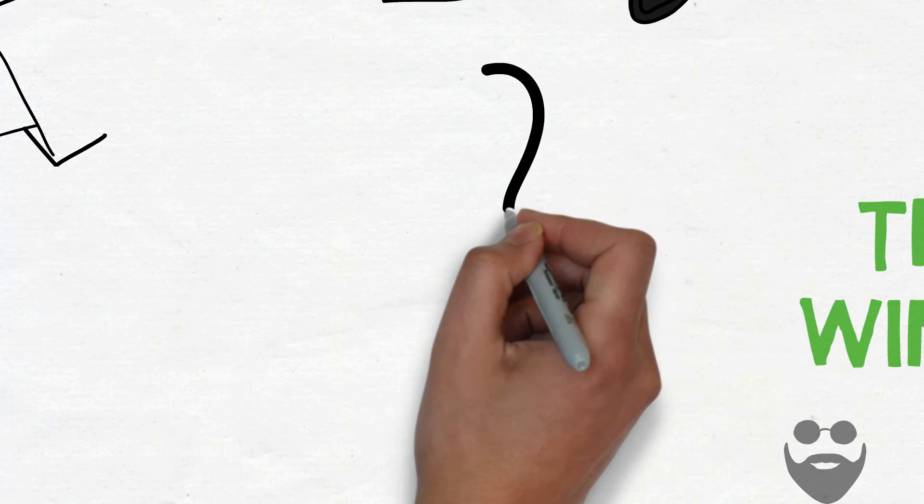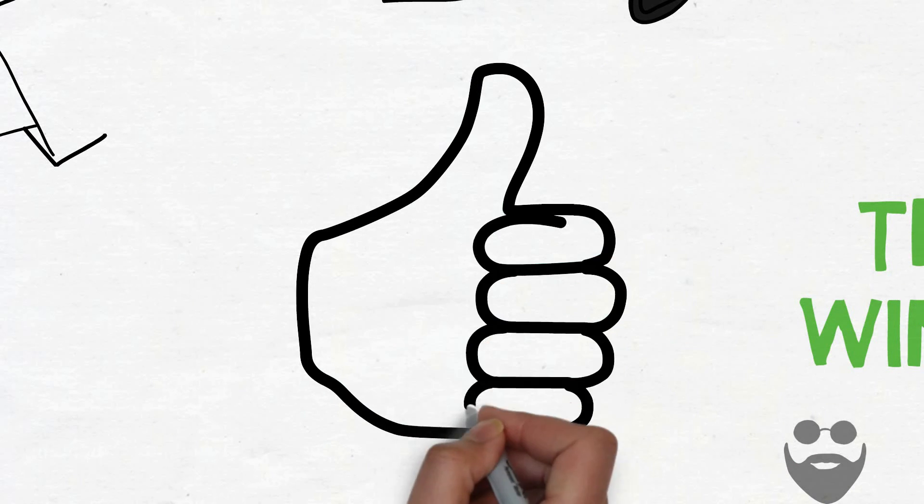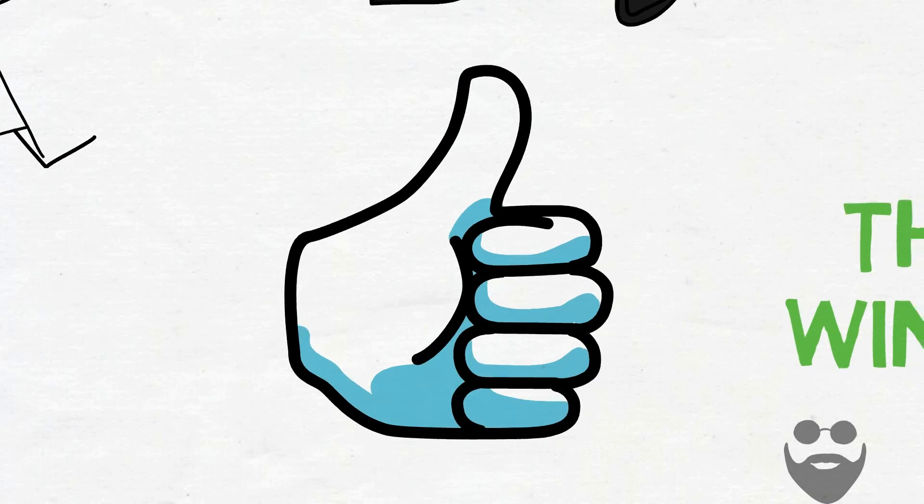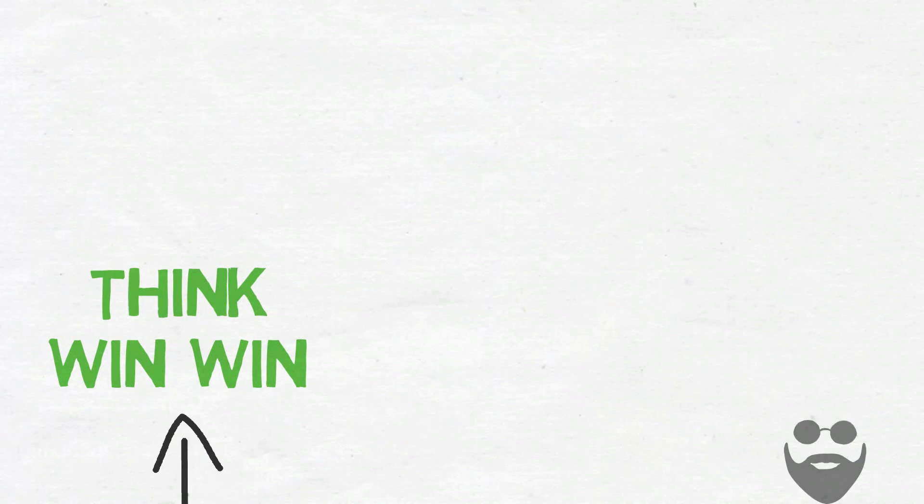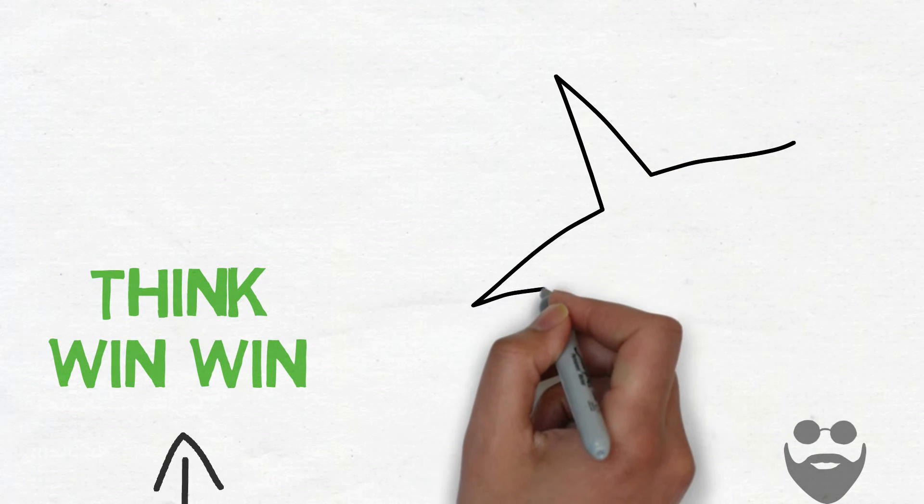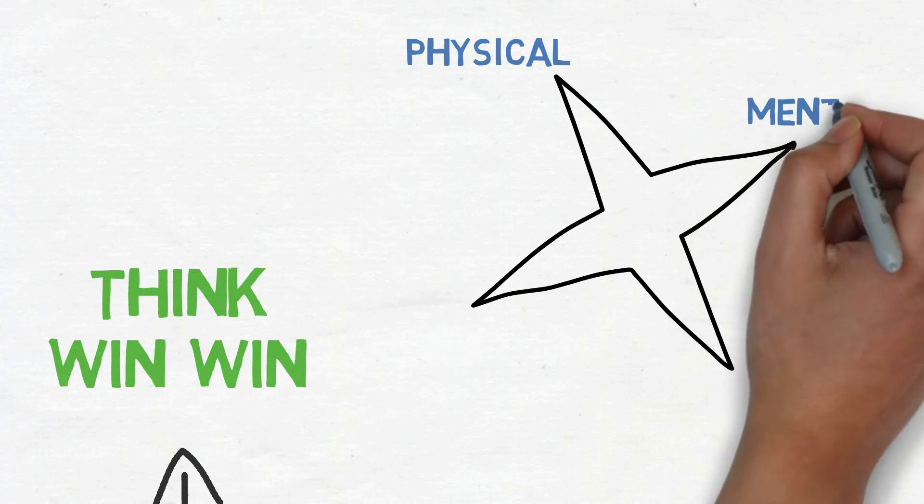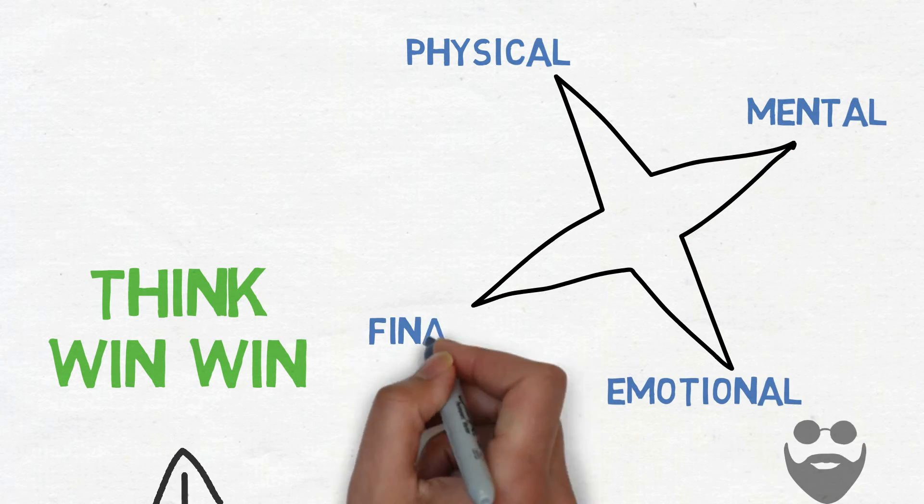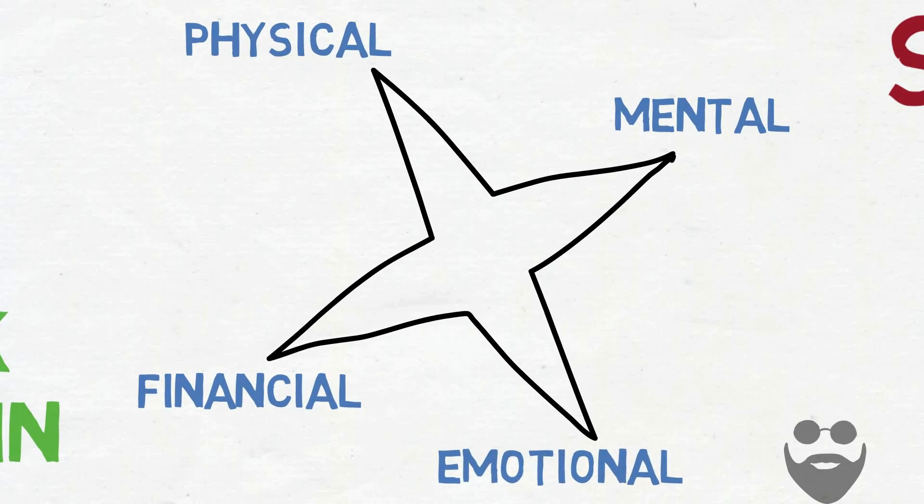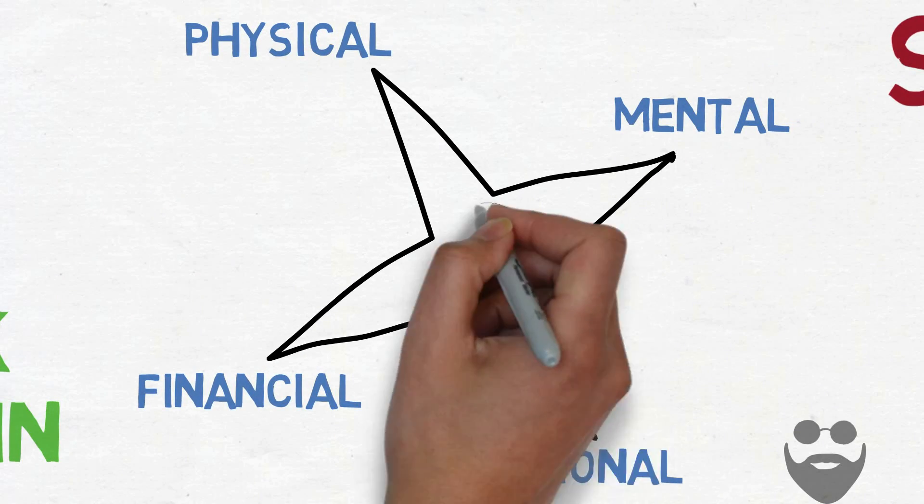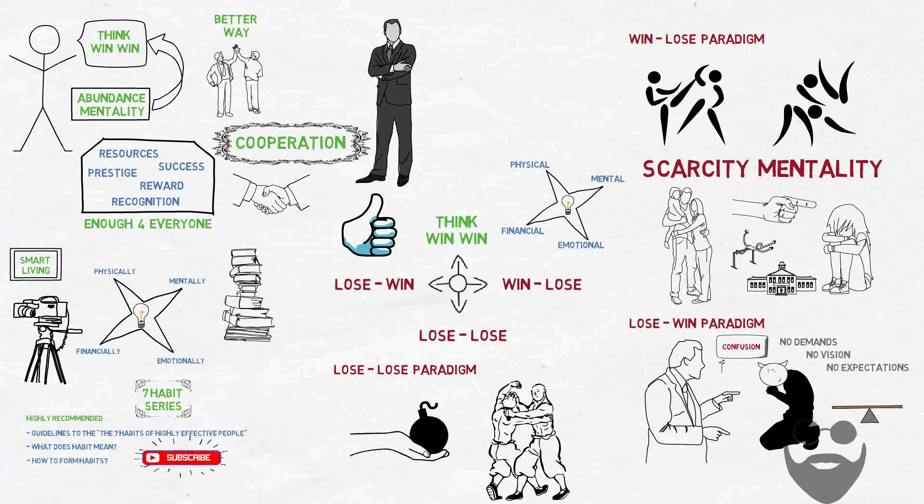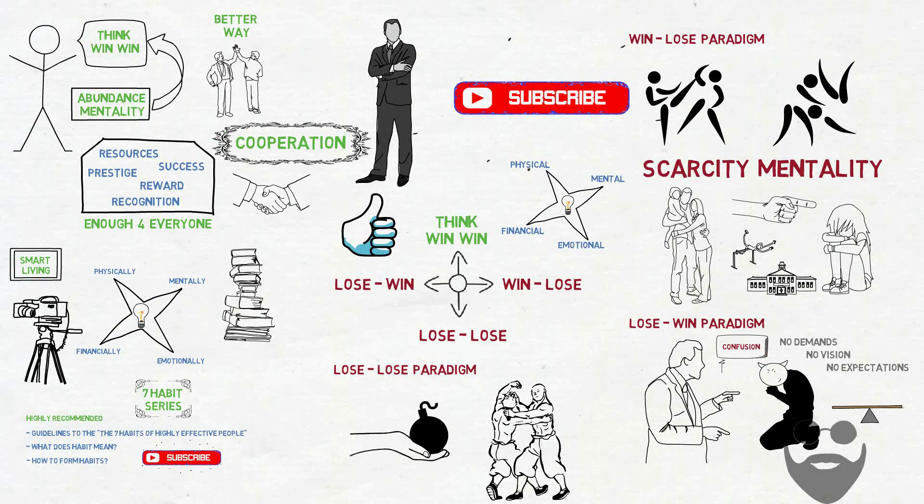Dear viewers, like this video if it has helped you to understand habit four, think win-win. Subscribe and join Mr. Smart to learn, practice, and promote smart living on four levels: physical, mental, emotional, and financial. All these entertaining animations are meant for your learning and inspiration. So what are you waiting for? Just subscribe to Mr. Smart and hit the bell button for notifications. Live a long smart living.